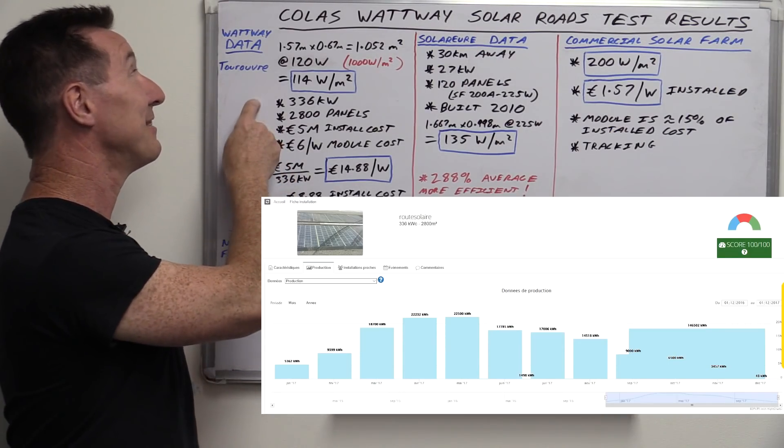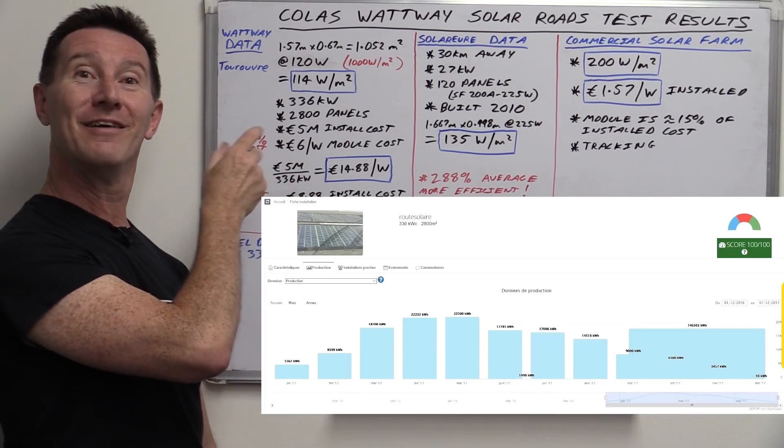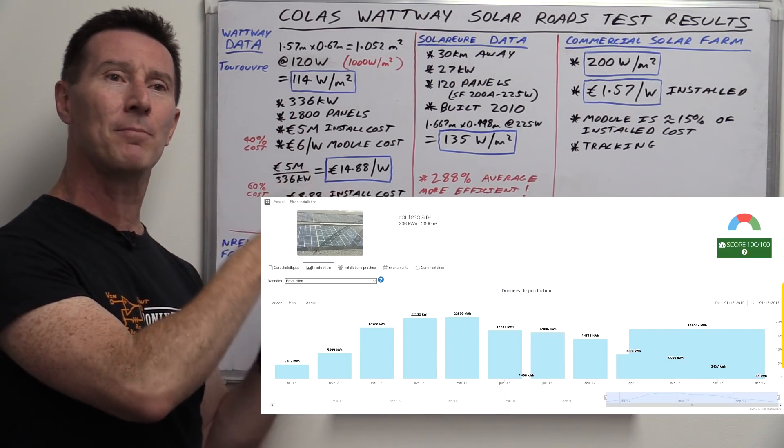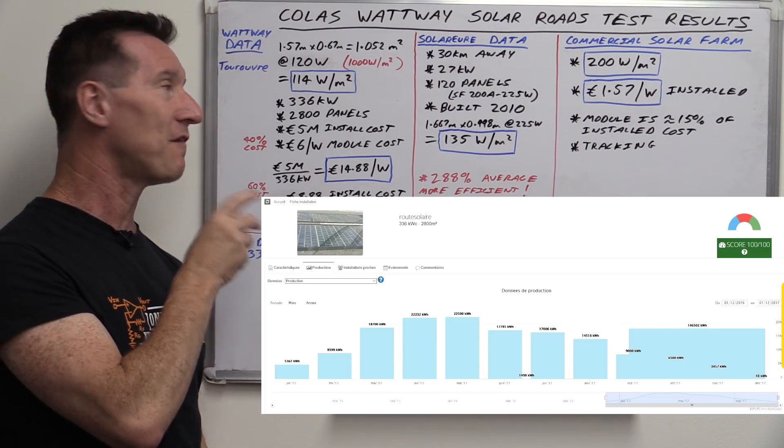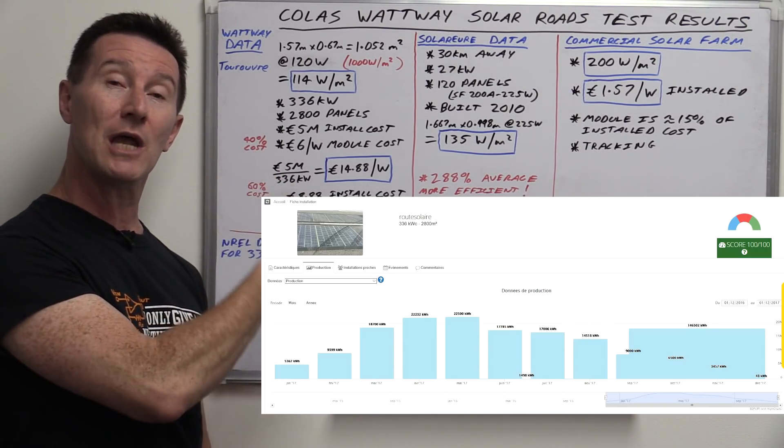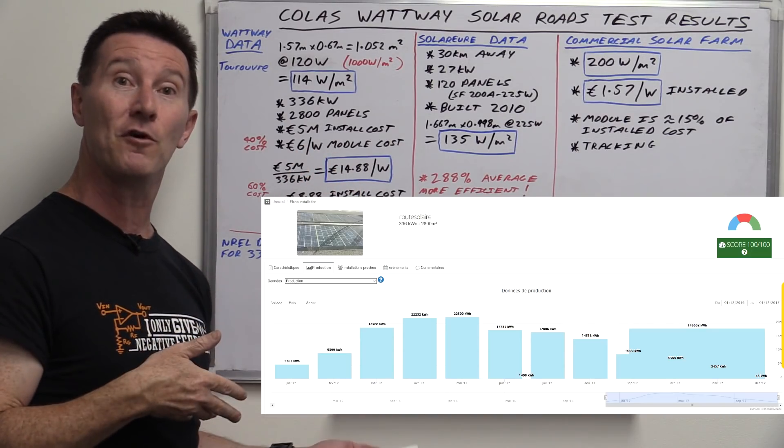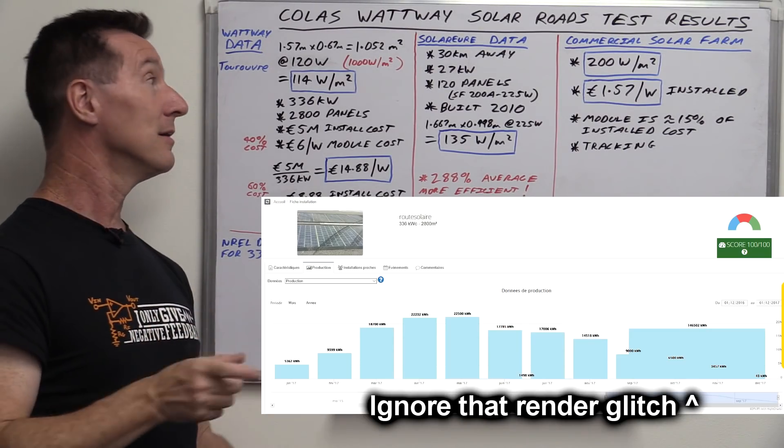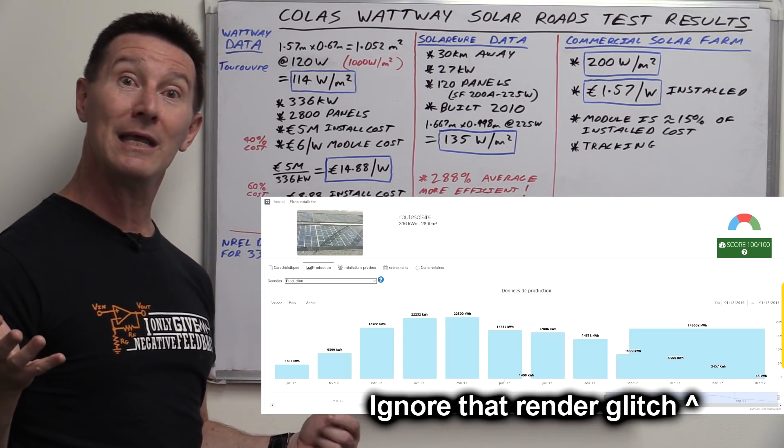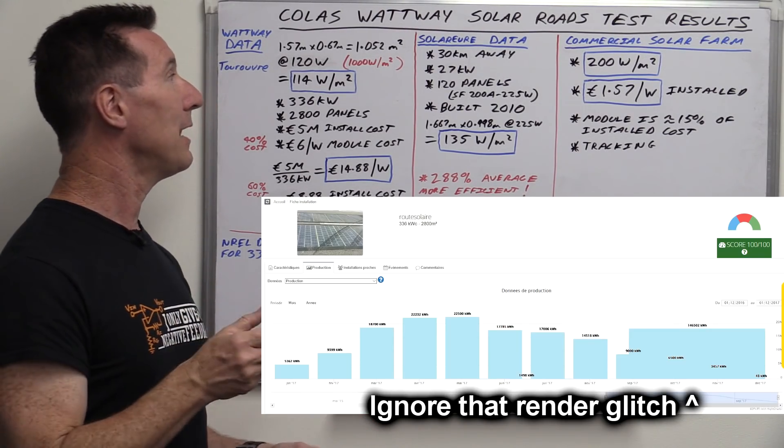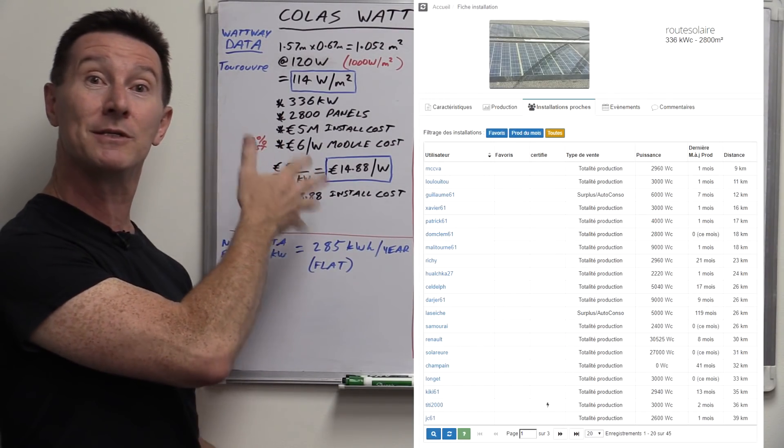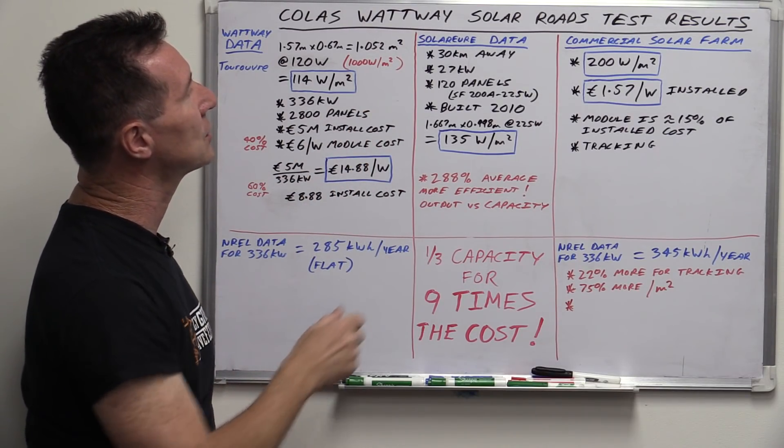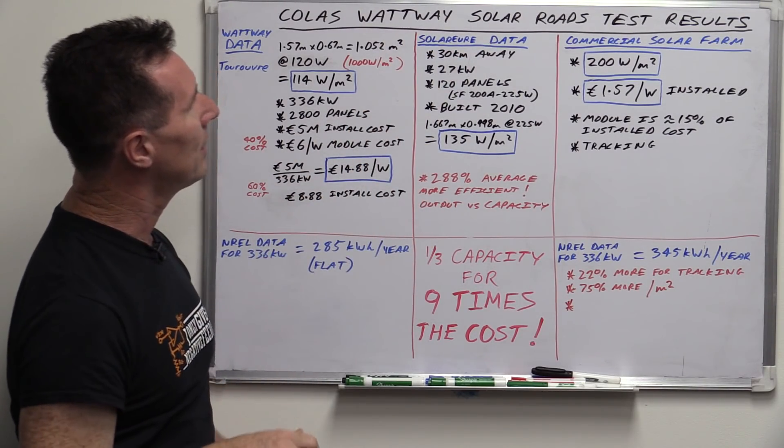Anyway, there's a French website that has the exact data for this Colas Wattway Road. And basically, it goes back to last December, but the December figure was a bit funny. So I'm only going to actually track the data from January through to November, because as I film this, we haven't finished December yet. So we've got 11 months worth of data and we can see nearby solar installations as well. Now, I couldn't really find one that matches the size of this, but it doesn't matter. We're going to adjust for that as you'll see.